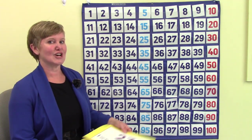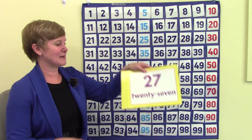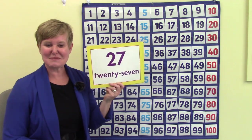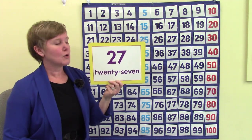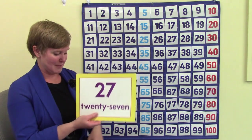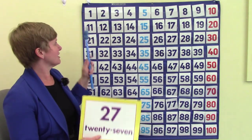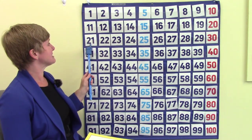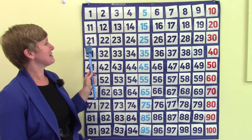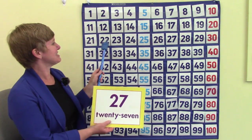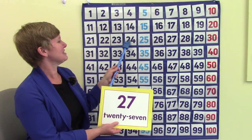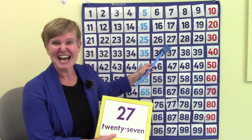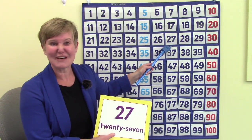Let's look at our next number: 27. We find 27 by looking at our row that has all the 20s in it: 21, 22, 23, 24, 25, 26, and 27.